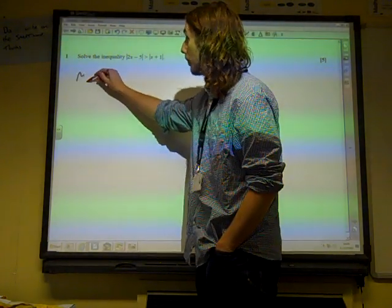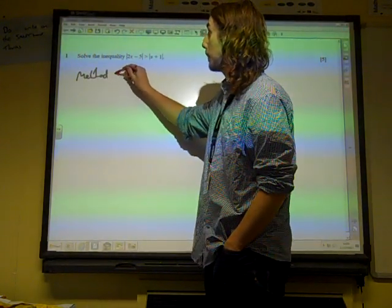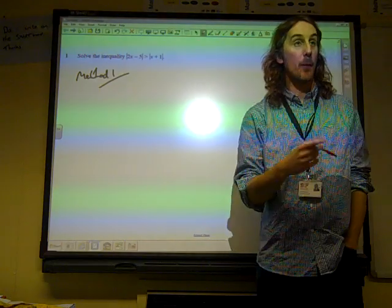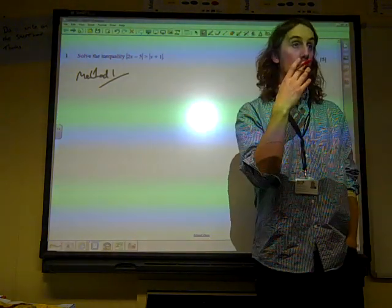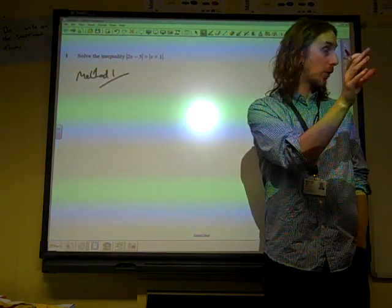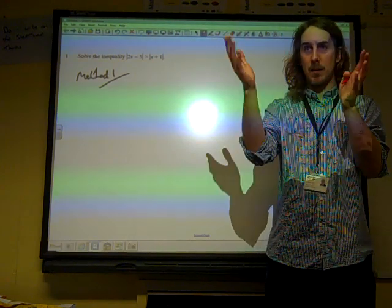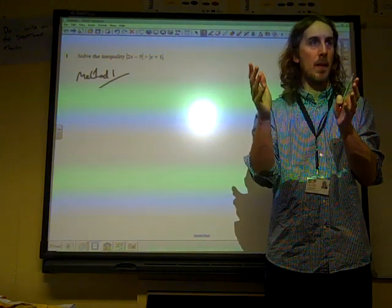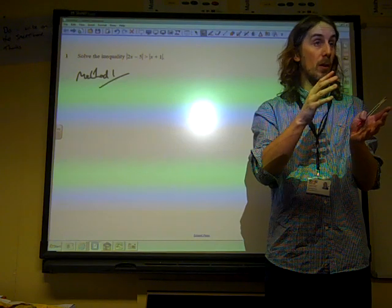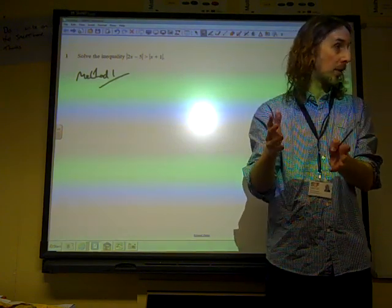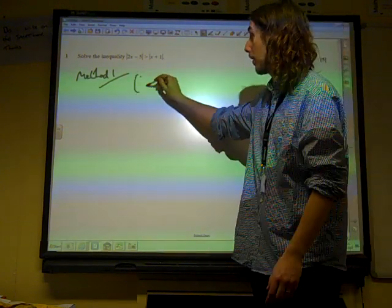So method 1, and this is the way that people most commonly did this. If we want to solve a modulus equation, then a way of getting around the difficulty of working with the modulus side is to square both sides, because it's the other thing that makes everything positive.